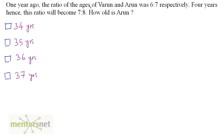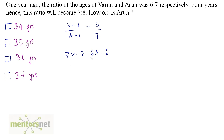One year ago, the ratio of ages of Varun and Arun was 6 to 7 respectively. 4 years hence, this ratio will become 7 to 8. How old is Arun? Let the current ages of Varun and Arun be V and A. One year ago, V minus 1 over A minus 1 equals 6 by 7. So, 7V minus 7 equals 6A minus 6, giving 7V equals 6A plus 1. Therefore, V equals (6A plus 1) by 7.